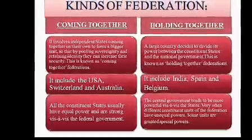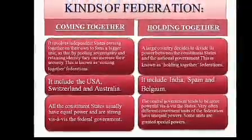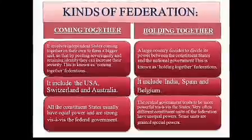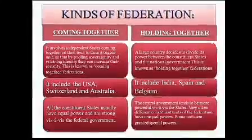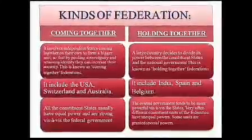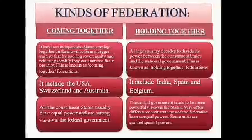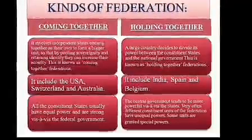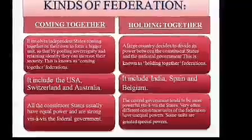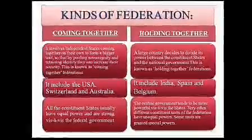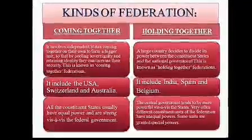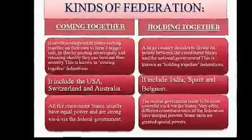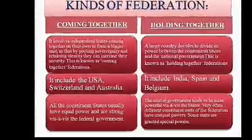So children, we are learning about the kinds of federations: coming together and holding together. The first route involves independent states coming together on their own to form a bigger unit. They are pooling their sovereignty and trying to retain their identity in order to become more and more secured.